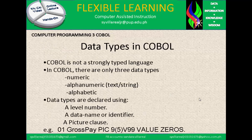Now, data types in COBOL. COBOL is not a strongly typed language. In COBOL there are only three data types: Numeric, Alphanumeric, and Alphabetic. Data types are declared using a level number, a data name or identifier, and a picture clause. In modern terms these are called variables. For example: 01 GROSS-PAY PIC 9(5)V99 VALUE ZEROS. The V is the decimal point, so 9(5)V99 represents something like 33300.00 — that is the idea of GROSS-PAY.